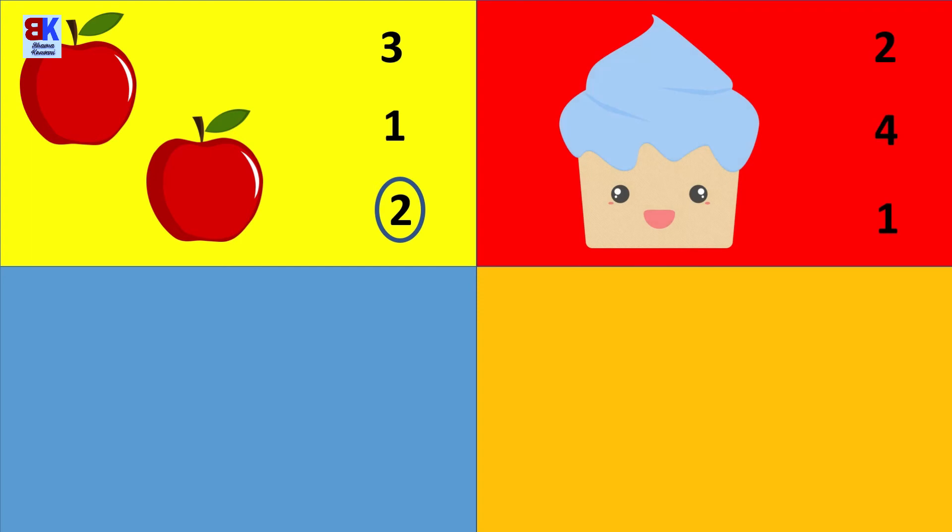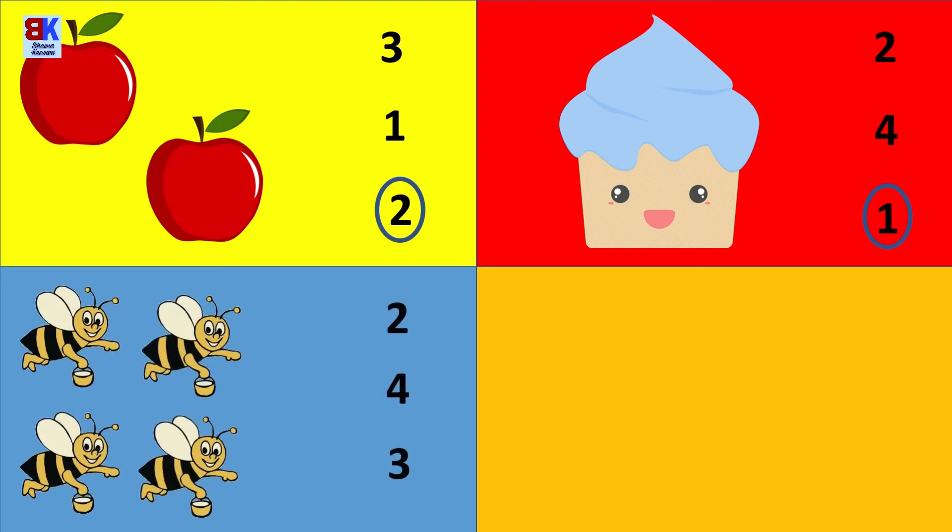Count the muffins now. How many muffins are there? Just one. How many honeybees are there? Let's count: one, two, three, four. Correct.